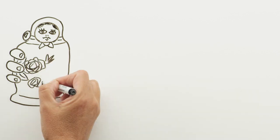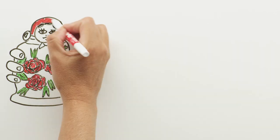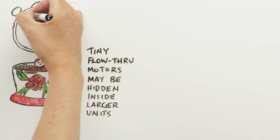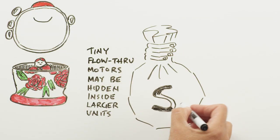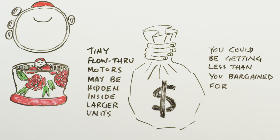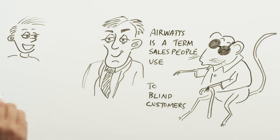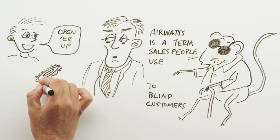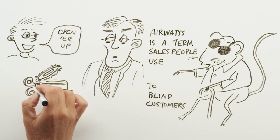For example, tiny flow-through motors may be hidden inside what appear to be large units. You could be paying a high price and getting less than what you bargained for. Before you make your purchase decision, ask the salesperson to open up the canister, so that you can see the motor for yourself.